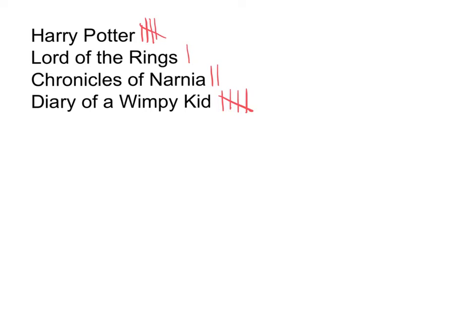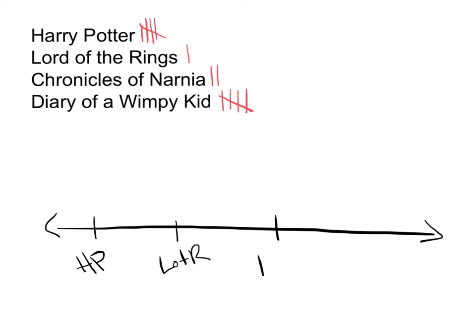Now on this one, since we're doing votes on a book, you could do your number line, instead of doing a scale from one to five, you could label it by the books. So you could say, this is the votes for Harry Potter, this is the votes for Lord of the Rings, this is the votes for Narnia, and these are the votes for Wimpy Kid.